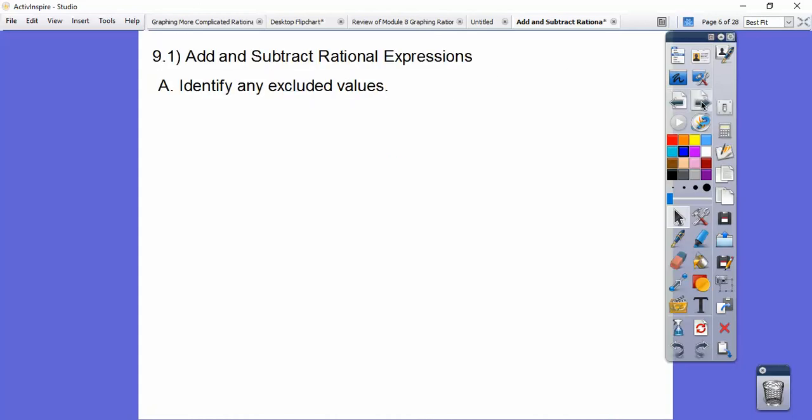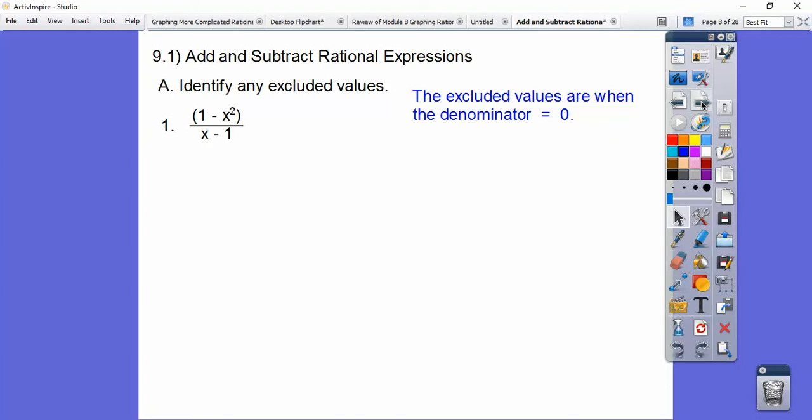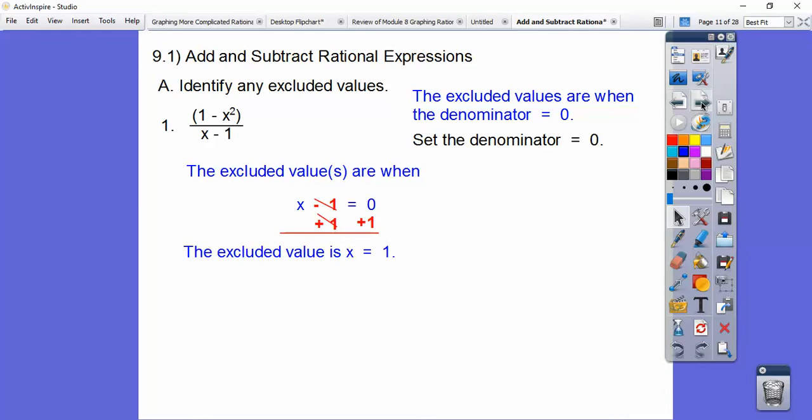So let's add or subtract rational expressions. The first part is just identify any excluded values. The excluded values are when the denominator equals zero. So we just focus on the denominator for these directions. I don't care what's in the numerator, we just set that denominator equal to zero. So here we go, we just add one to both sides, and so our excluded value is X equals one.